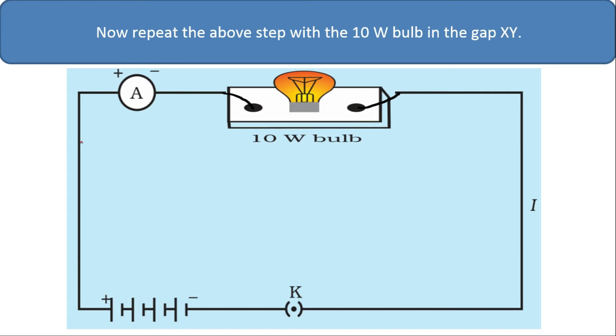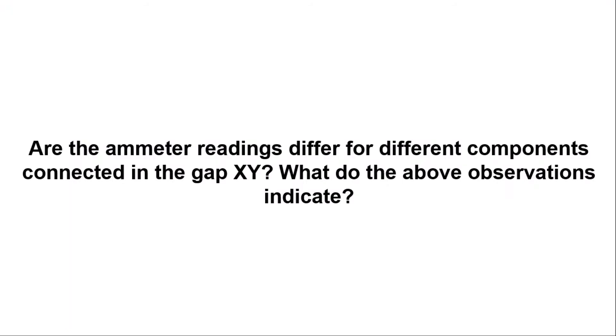Let the current flow, note down the reading of the ammeter. Are the ammeter readings different for different components connected in gap XY? What do the above observations indicate? Did you find that the current is different for different materials?